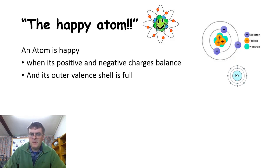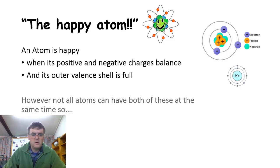So there's a neon atom. It's got eight in its outside shell. It's happy. It's got positive and negatives balancing. It's got ten protons in the nucleus, and it's got ten electrons around the outside. Its outside valence shell is full. It's one of the happiest atoms you'll find. But not every atom can have both of these at the same time.